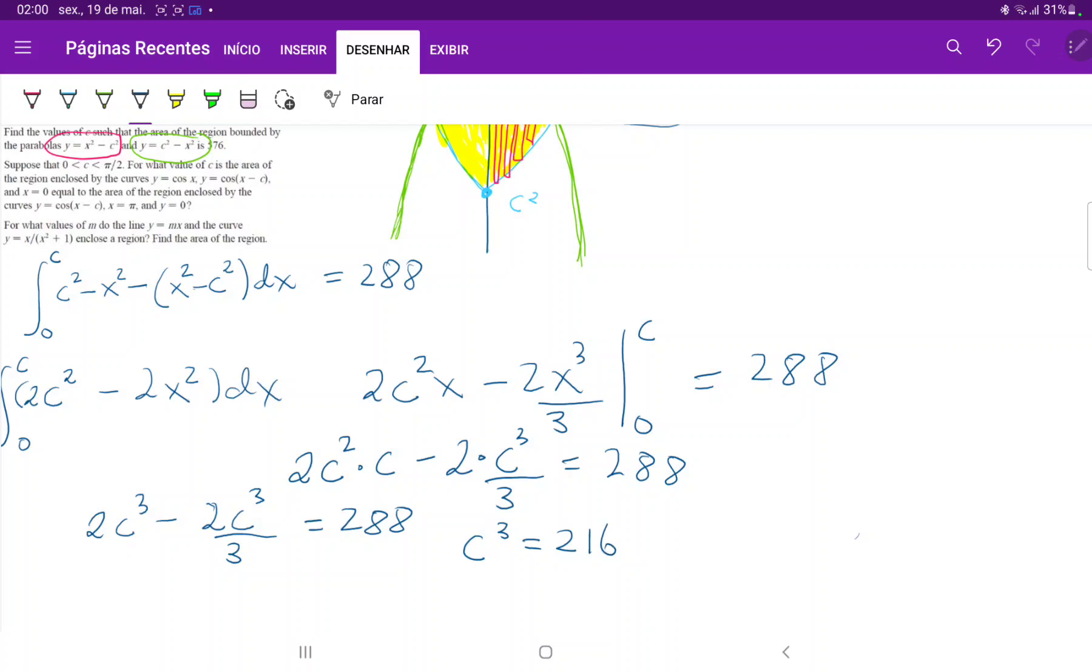And then when we take the cube root of that, we get, let's see, therefore c = 6.